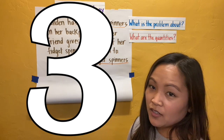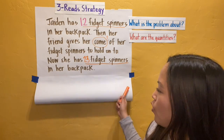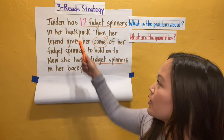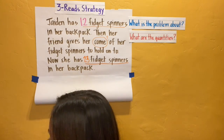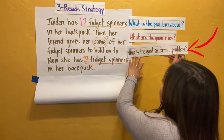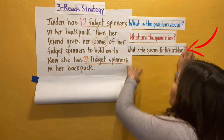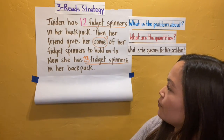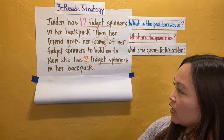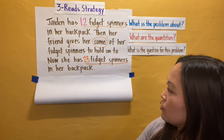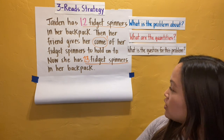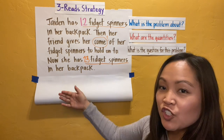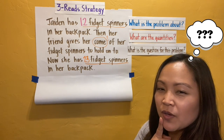The third read is going to think about: what is the question that I have hidden? So what question would make sense for this problem? Jaden has 12 fidget spinners in her backpack. Then her friend gives her some of her fidget spinners to hold on to. Now she has 23 fidget spinners in her backpack. What could the hidden question be? What would make sense?